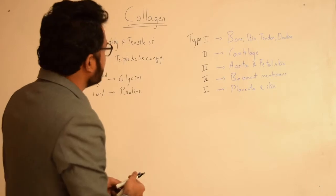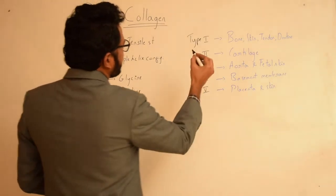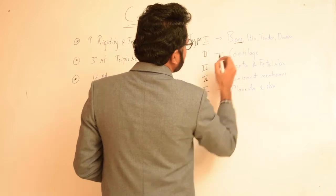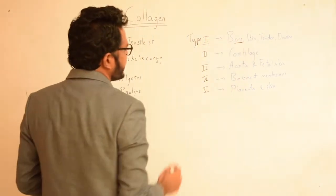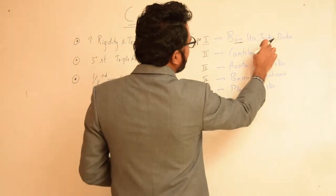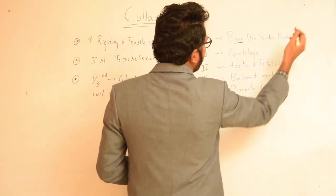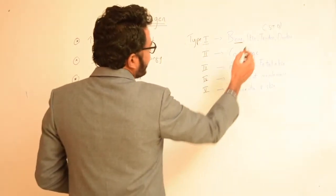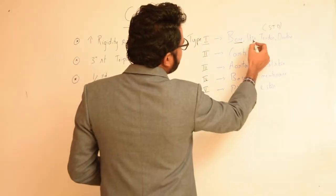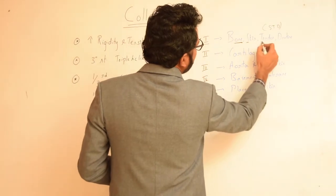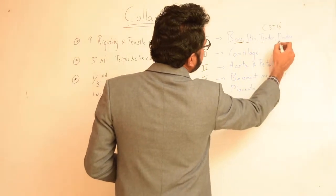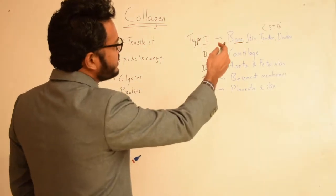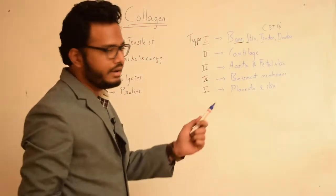If you observe type 1, we have 1 in bone — that's how you can remember that example. And skin, tendon, dentine can be remembered by the shorter form STD: S stands for skin, T stands for tendon, D stands for dentine. So type 1 is found in bone, skin, tendon and dentine.